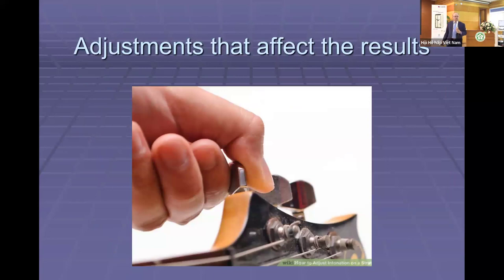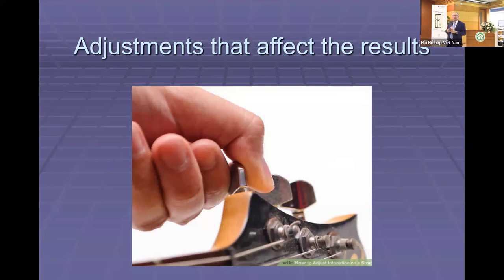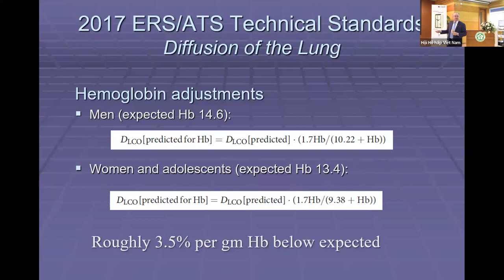There are a few adjustments that we have to make to the value based on what we know. The first is hemoglobin. If someone is anemic or polycythemic, they'll have either more or fewer sites for the CO to attach to. We need to know someone's hemoglobin level to get a correct value. The systems default to normal values of 14.6 for men and 13.4 for women. If significantly different from that, the test should be adjusted for polycythemia or anemia.